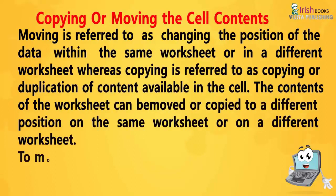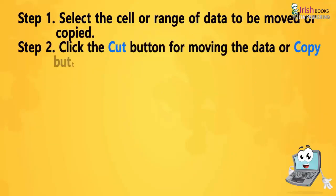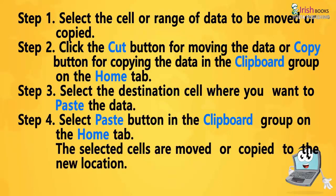Copy or moving cell contents: Moving refers to changing the position of the data within the same worksheet or in a different worksheet, whereas copying refers to duplication of content available in the cell. To move or copy the cell contents: Step 1: Select the cell or range of data to be moved or copied. Step 2: Click the Cut button for moving or the Copy button for copying in the Clipboard group on the Home tab. A border surrounds the selected range. Step 3: Select the destination cell. Step 4: Click the Paste button in the Clipboard group on the Home tab. The selected cells are moved or copied to the new location.